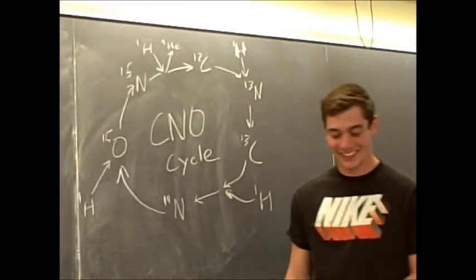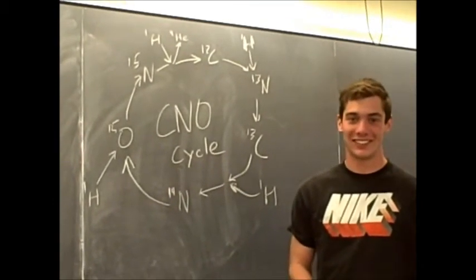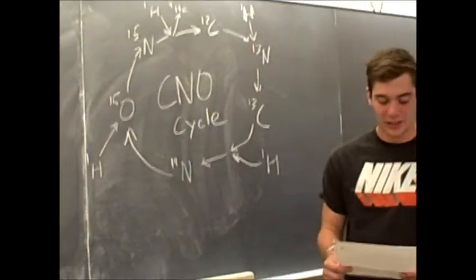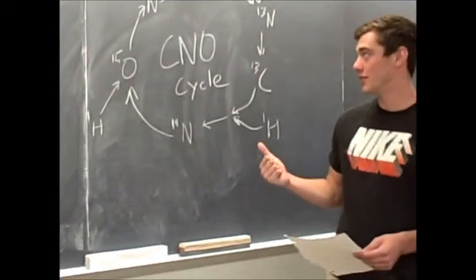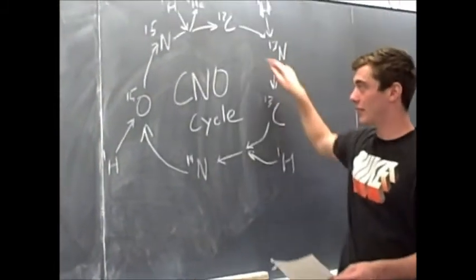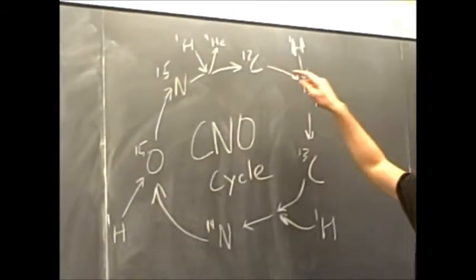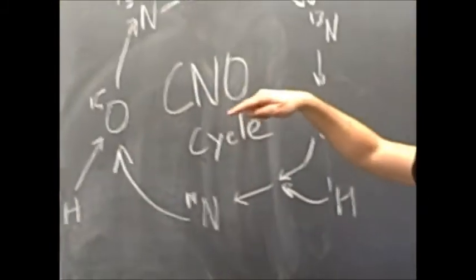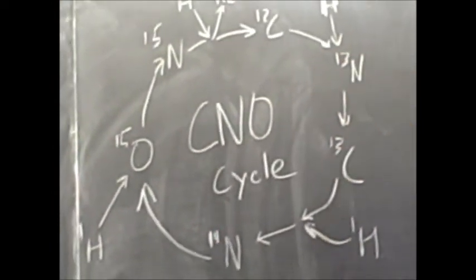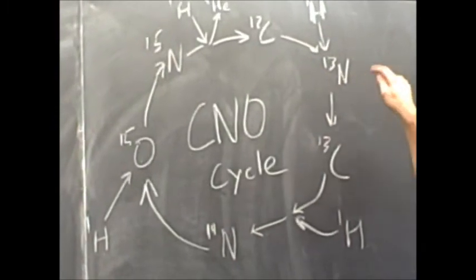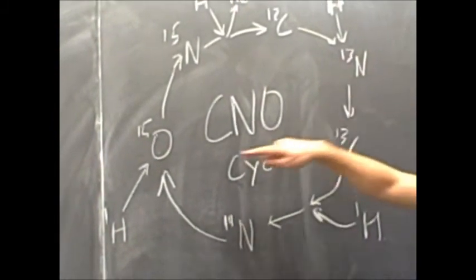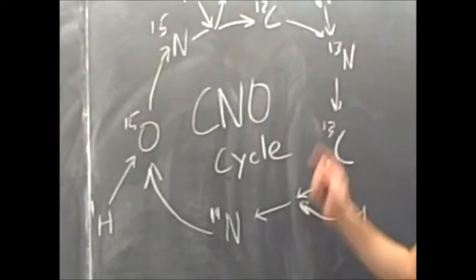All right, so the other process in the sun and the other stars is called CNO cycle, or the carbon-nitrogen-oxygen cycle. Here's just a quick look at it and it shows how some of the medium elements are formed, including carbon, nitrogen, and oxygen. They just revolve around the certain cycle.